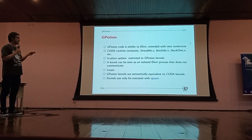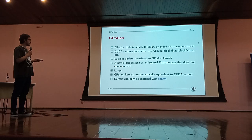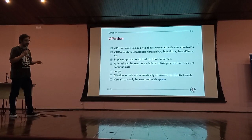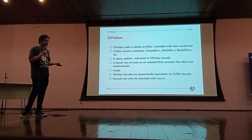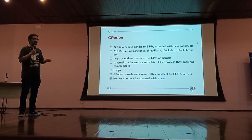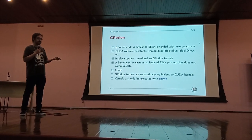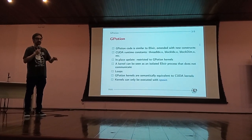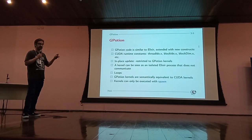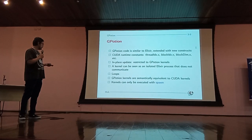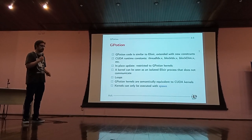gPotion is similar to Elixir but extends it with CUDA runtime constants and in-place update. In-place update can only happen inside kernels, and this doesn't break the language abstraction because a kernel can be seen as an isolated process in Elixir that does not communicate. The gMatrix can only be accessed by kernels — once a kernel is running, you cannot use a gMatrix in regular Elixir code. Kernels are semantically equivalent to CUDA kernels because they are compiled into CUDA kernels, and a kernel can be executed using a special spawn.